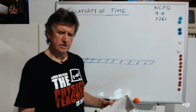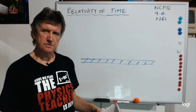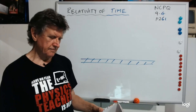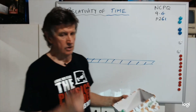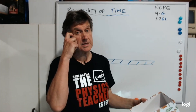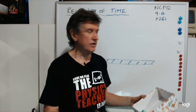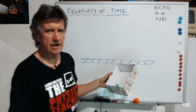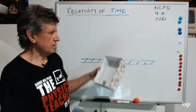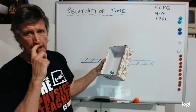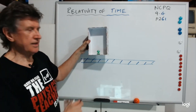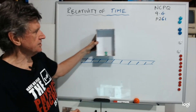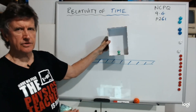Now the way Einstein would have explained this is using a little model, and it's basically based around the idea of the train again. So we've got a train — you can imagine this is a carriage on the train.